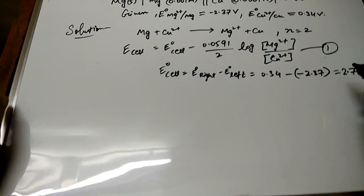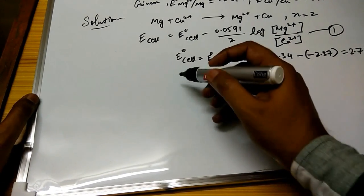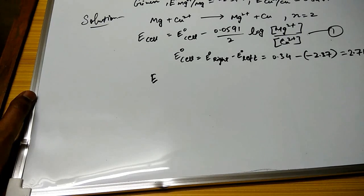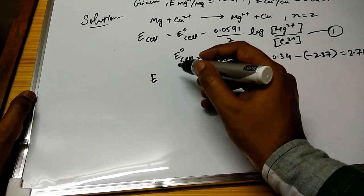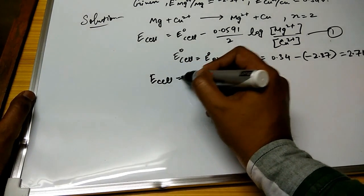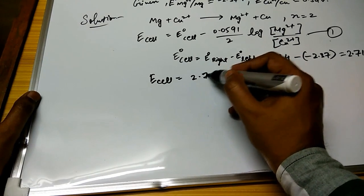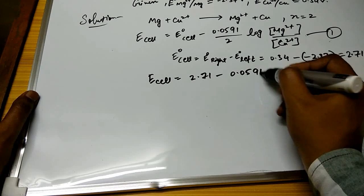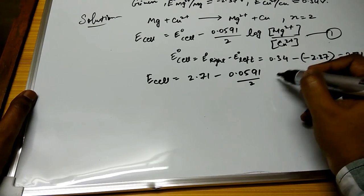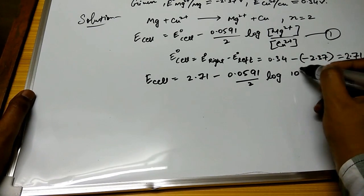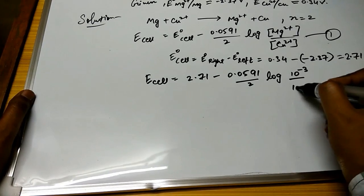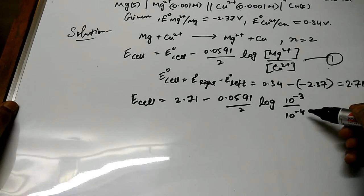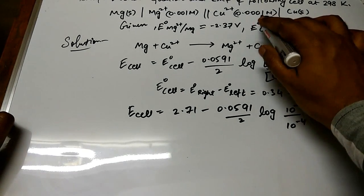Now this is equation 1. Now put this value of E°_cell in equation 1, we get E_cell = 2.71 - 0.0591/2 log(10^-3/10^-4).